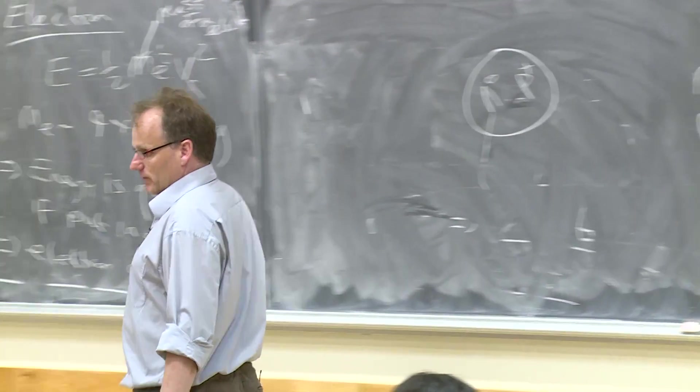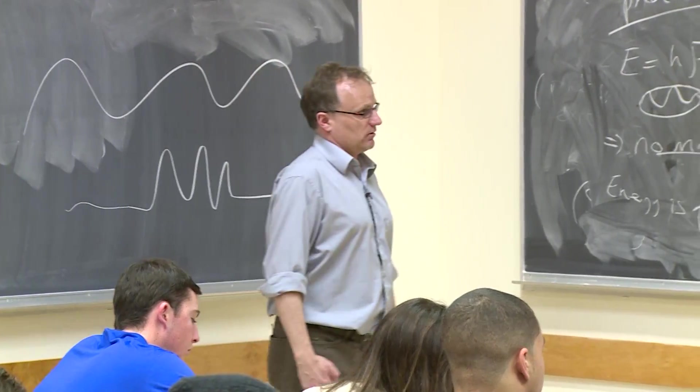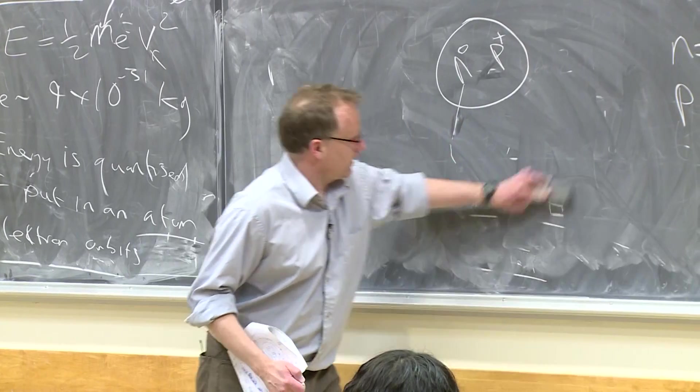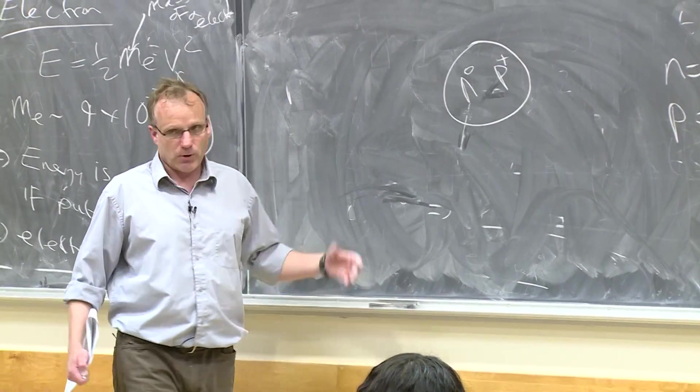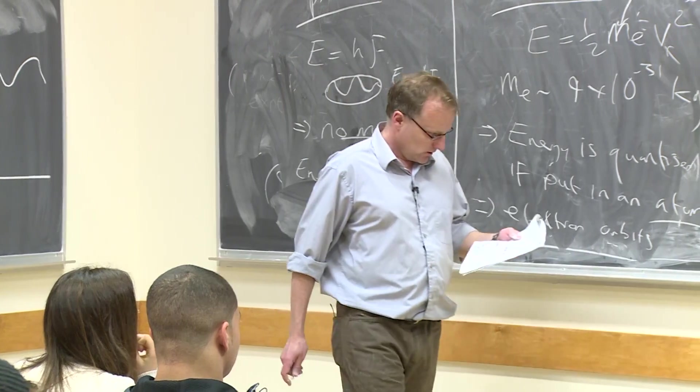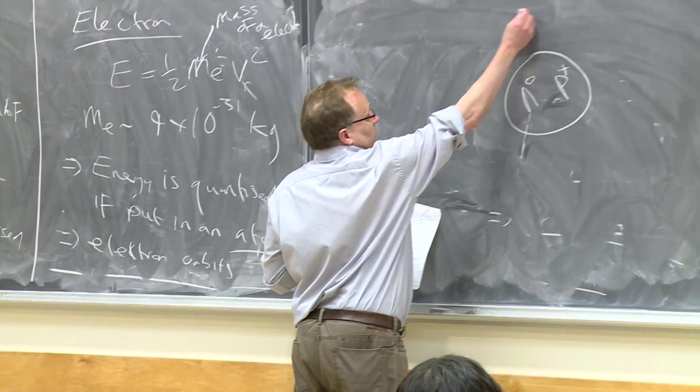So the neutrons and the protons live in the center of the atom, called the nucleus. They stick together. The neutrons basically act like glue. You could think of the neutrons as keeping the protons together. The protons don't really want to stick together, because they're both positively charged. And like charges don't like each other.